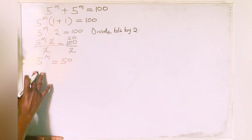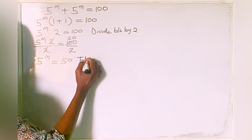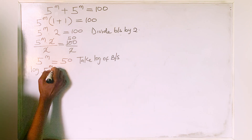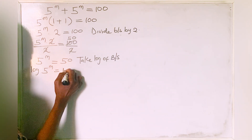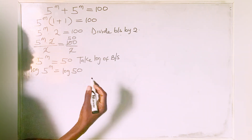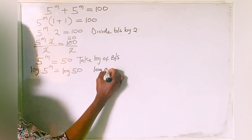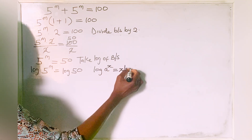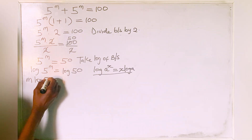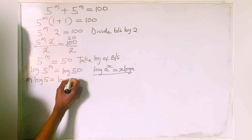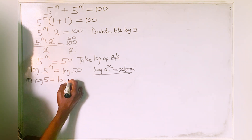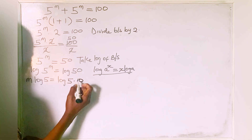Now what we have to do is take the log of both sides. So we say log of 5 to the power of m is equal to log of 50. Now there is a law of logarithms where log of a to the power of x is the same thing as x times log a. We can also rewrite 50 as 5 multiplied by 10, which still gives you 50.